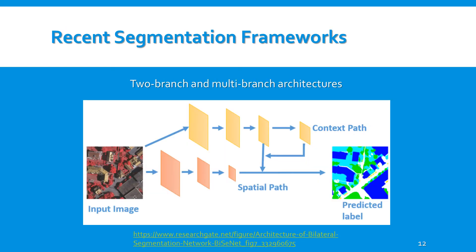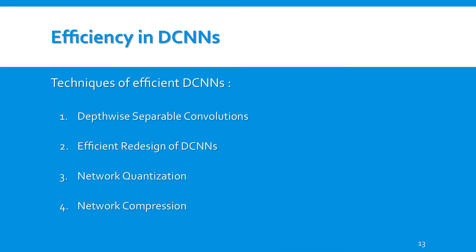The more recent segmentation approaches incorporate two-branch and multi-branch systems. In a two-branch system, the global context is captured with a deeper branch at low resolution, while the boundaries are learned in a shallow branch at full input resolution. These are common techniques of efficient DCNNs, which can be partitioned into four categories. One of the more popular techniques is using depthwise separable convolutions, which decomposes a standard convolution into a depthwise convolution and a one-by-one pointwise convolution.